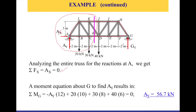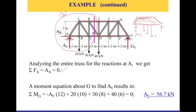Now we still need to find AY. We take the moment around point G — we're still analyzing the entire structure, not doing any sectioning yet. Taking the moment around G eliminates GY since it passes through that point, leaving four forces. Assuming counterclockwise is positive: AY rotates clockwise, so it's negative, and the distance from G to AY is 12.